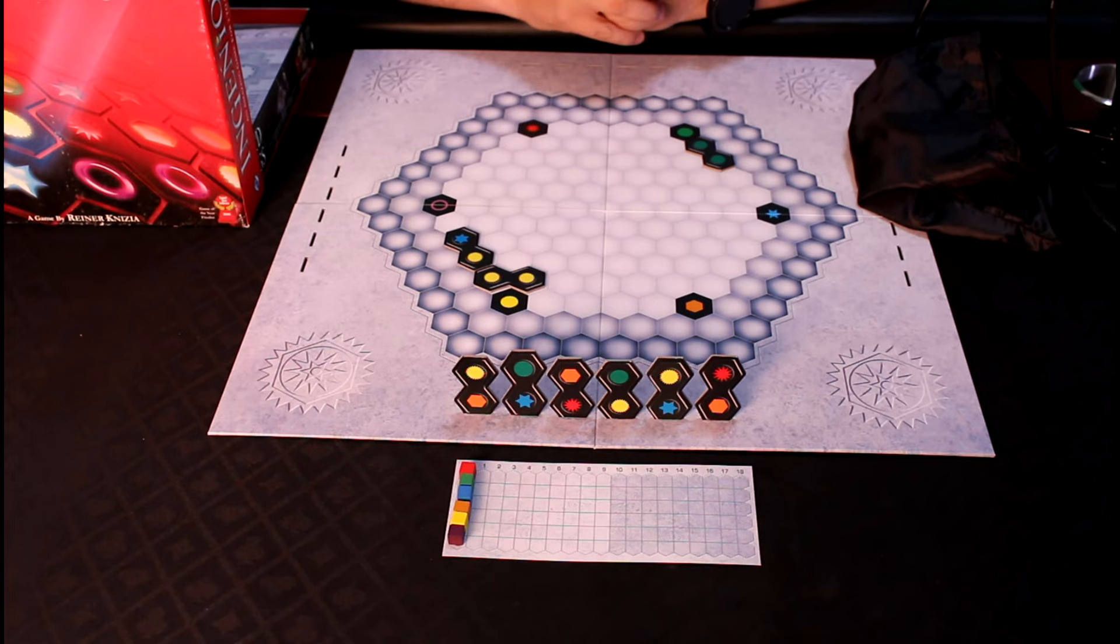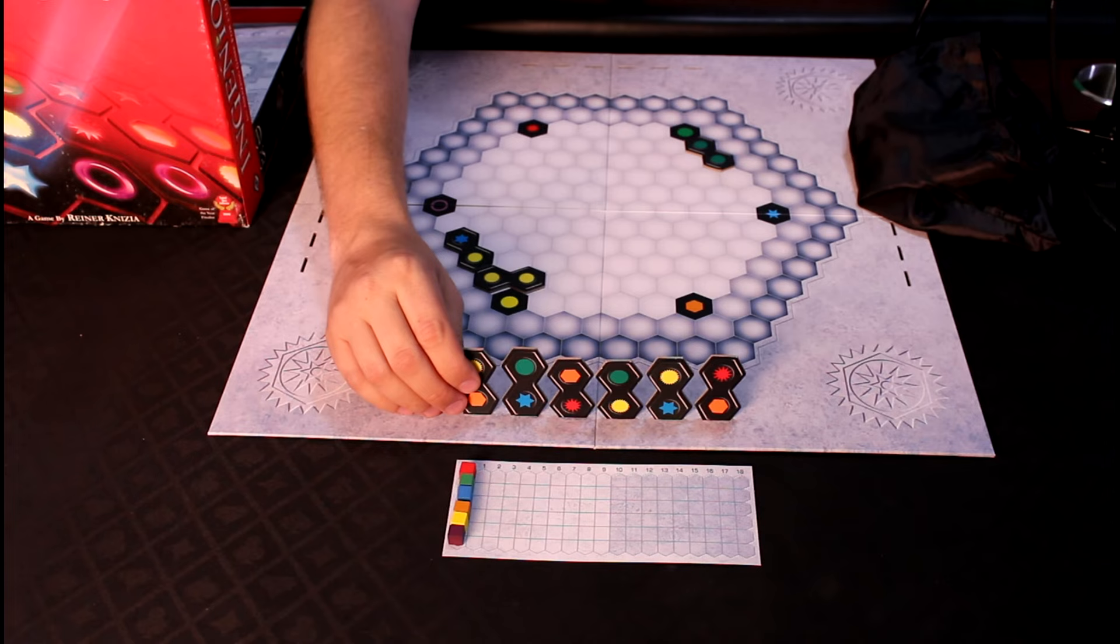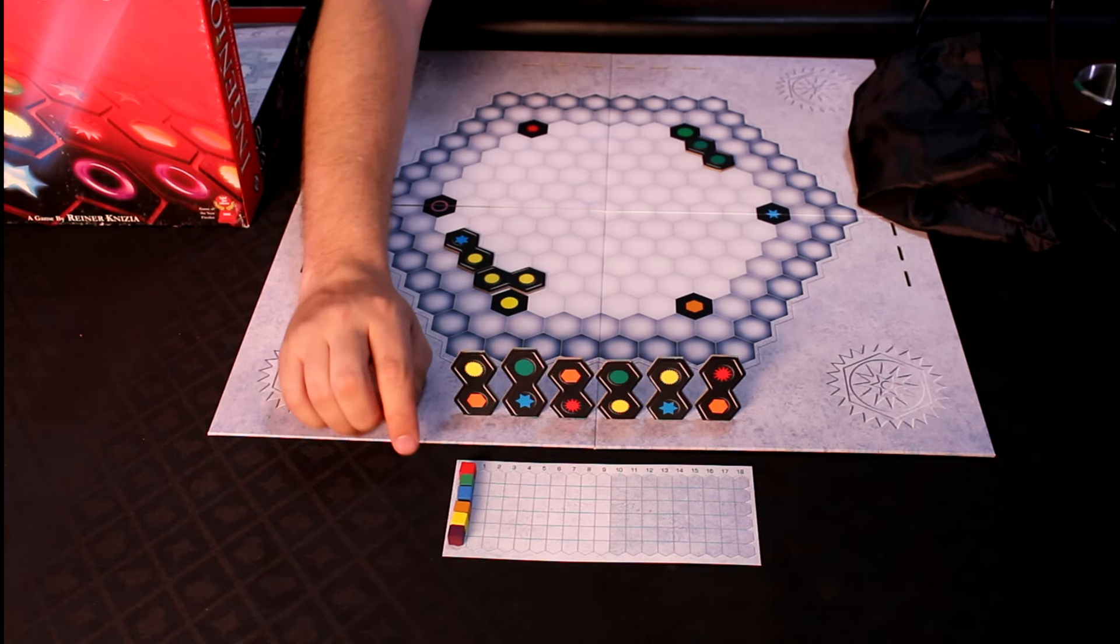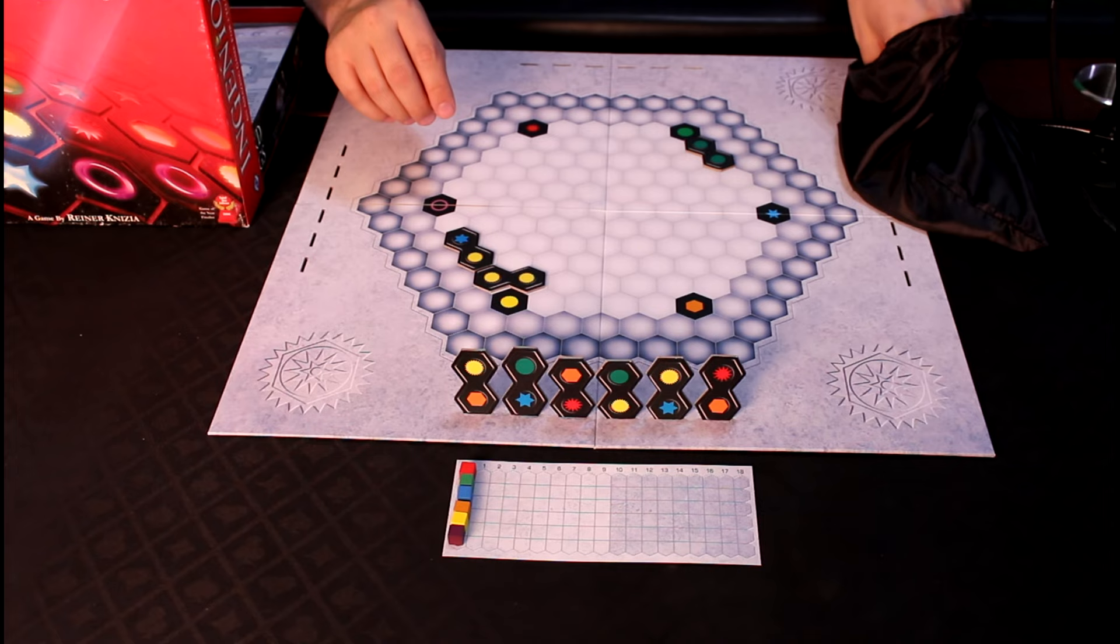So, all players will start with 6 tiles in front of them. The board is designed to hold the tiles in front of you for your convenience. Every player will have one scoreboard with the 6 tokens of the colors that are on the tiles.